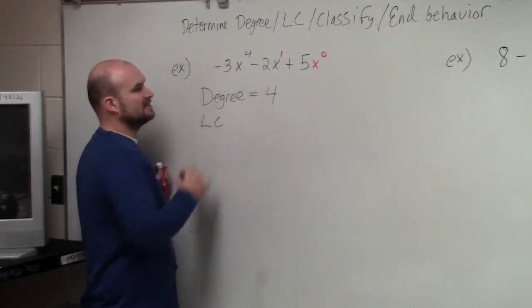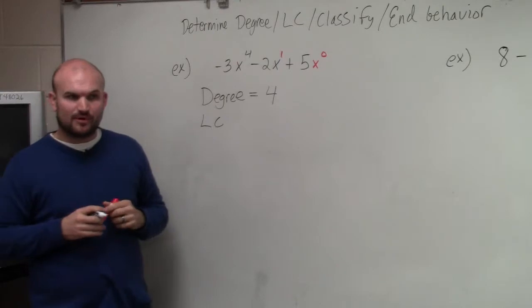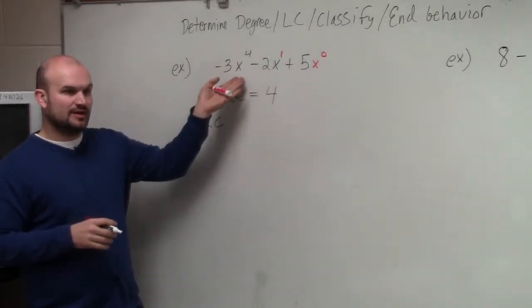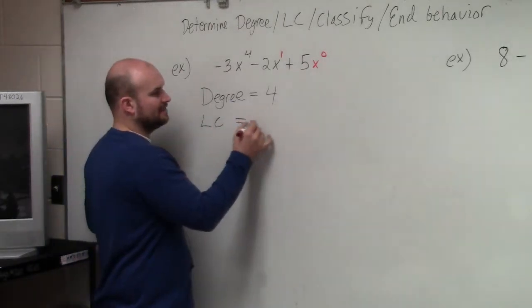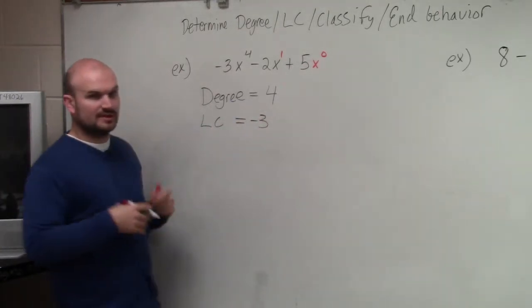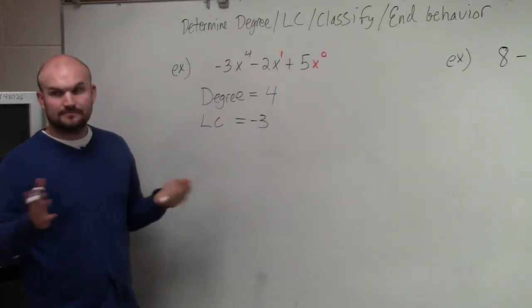Then the leading coefficient is the coefficient of that exponent. So therefore, we look at the exponent that has the degree, and we see the leading coefficient is negative 3. It's not negative 3x or negative 3x to the fourth. It's the coefficient, the number in front. That was it.